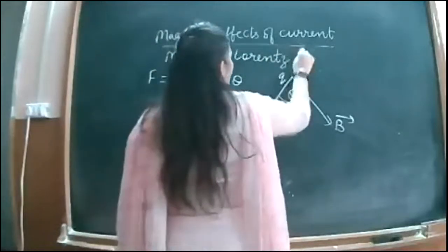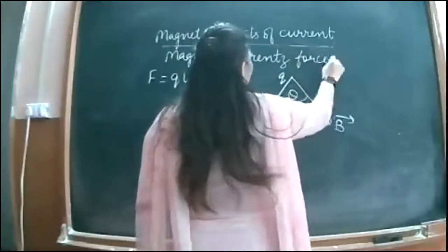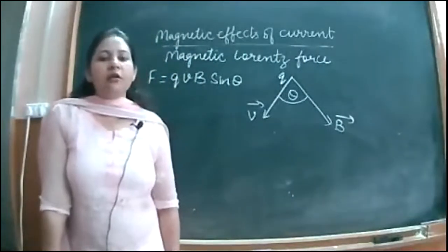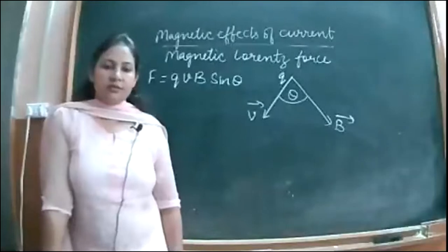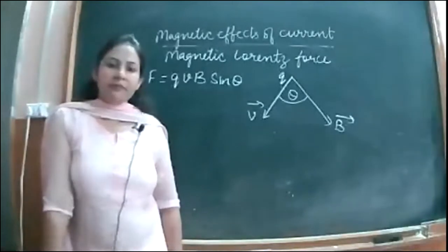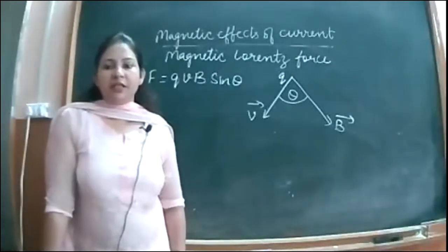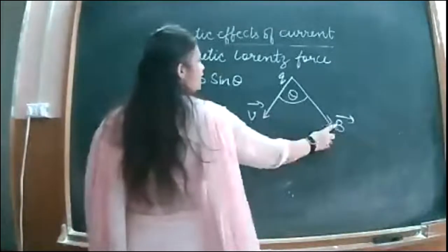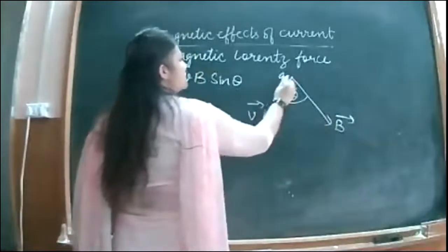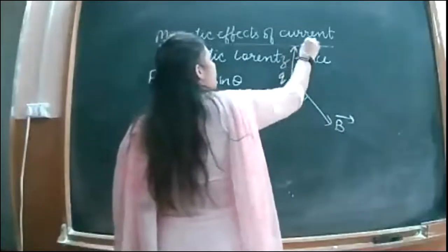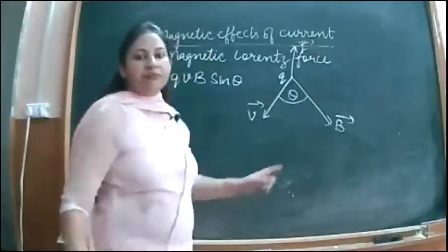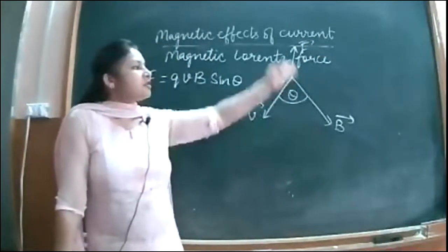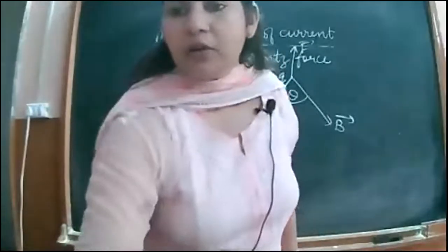This force is called magnetic Lorentz force. If v and B are in certain directions, then the force will be in a plane perpendicular to these two. Note down the direction: if v and B are in a given plane, force will be perpendicular to that plane.